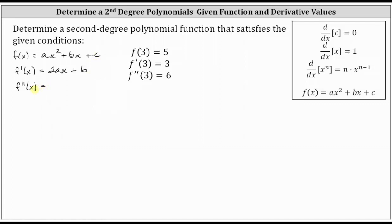To find f double prime of x, we differentiate two ax plus b with respect to x, treating a and b as constants. The derivative of two ax is two a, plus the derivative of b, which is zero.